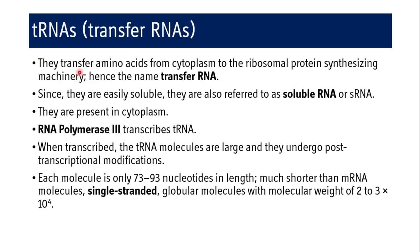What are tRNAs? They transfer amino acids from the cytoplasm to the ribosomal protein synthesizing machinery — hence they are called transfer RNA or tRNA. Since they are easily soluble, they are also referred to as soluble RNA or sRNA. This sRNA should not be confused with small nuclear RNA, which is abbreviated as snRNA. So soluble RNA, sRNA, and transfer RNA are the same, but do not confuse sRNA with snRNA.